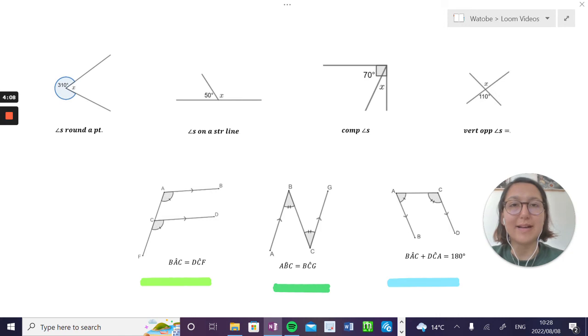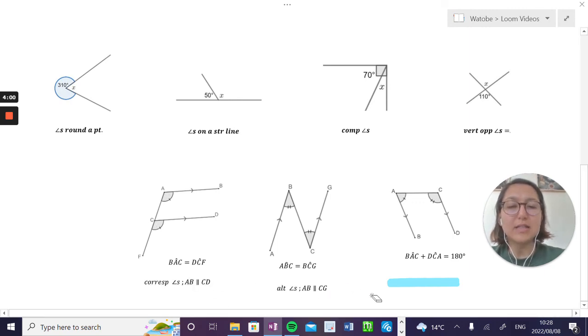Then we're going to look at parallel lines and the angles they create—the relationships we can find between parallel lines and the angles between them. These are going to be corresponding angles, alternate angles, and co-interior angles.